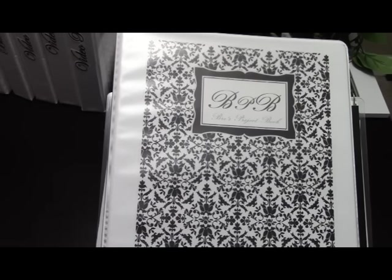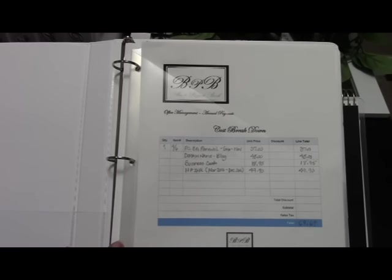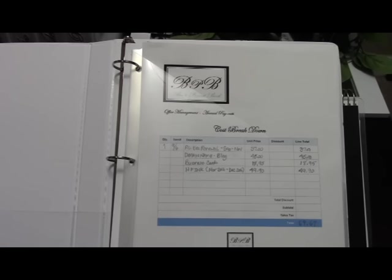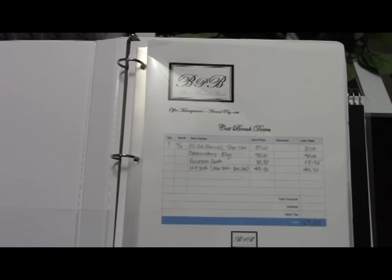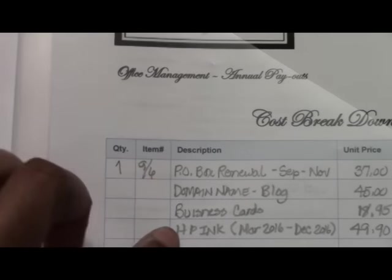This one right here is my business taxes binder. I thought we would start with this one since tax season is coming up, and you can see how I go about preparing my taxes for Breeze Project Book. So let's go to the first page here. When you first open it up, this template is a cost breakdown of different areas of how I go about running Breeze Project Book. This one is for my office management cost breakdown and as you can see there are some line items here.